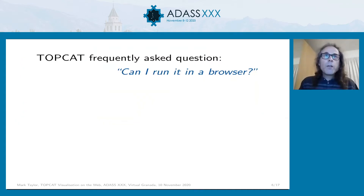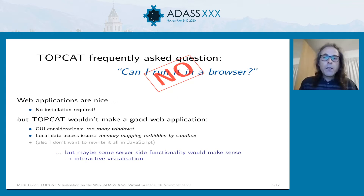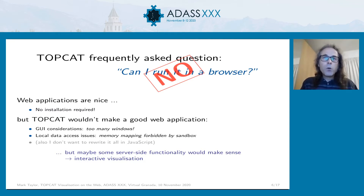I've been working on TopCat for several years and one question I hear quite often is: can I run it in a browser? The answer is basically no. Web applications are great — there have been plenty of talks at this conference showing amazing stuff happening in browsers — but I don't plan to move TopCat wholesale into a browser. One reason is GUI considerations: fitting all the controls into one browser window isn't really feasible from a usability point of view. There are also issues with memory management, especially for data sets larger than local memory. It uses disk mapping which wouldn't work well from within the browser sandbox. But there are some aspects of what TopCat does that make sense in a browser, and interactive visualization is one of those.